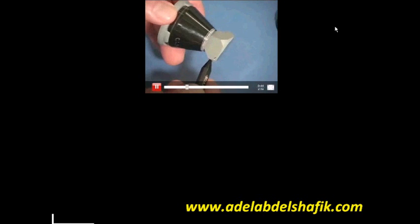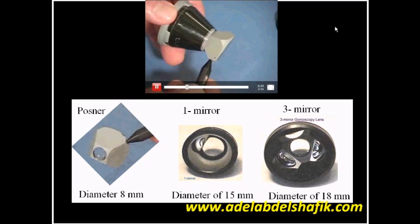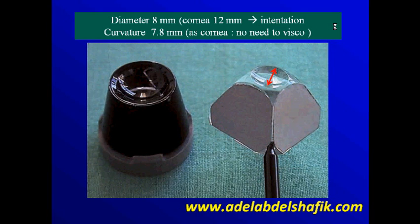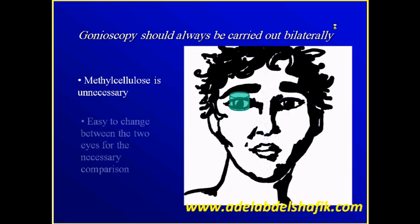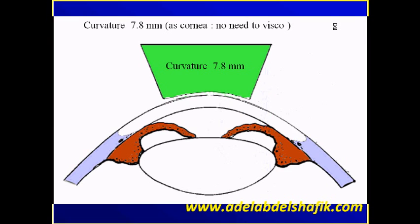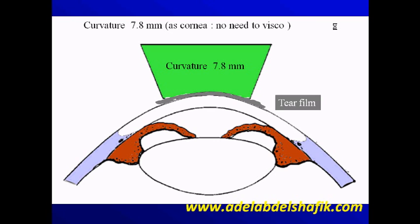This is the difference between the size of the three-mirror and the Puzner — it's much smaller. The Puzner lens has a diameter of only 8 mm. The curvature of this lens is 7.8 mm, matching the curvature of the cornea, so no visco is needed to apply it. The advantage is that it allows easy examination from one eye to the other. You don't need to use any methyl, which causes blurring of vision, and you get the advantage of comparing the angle of one eye to that of the other.